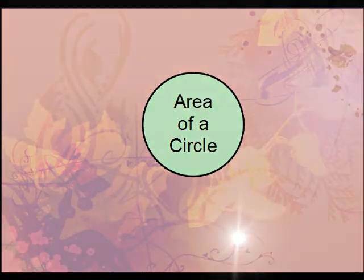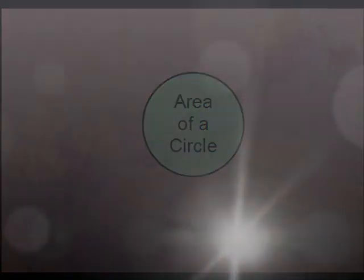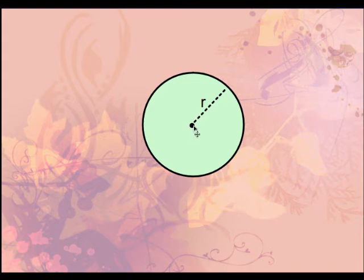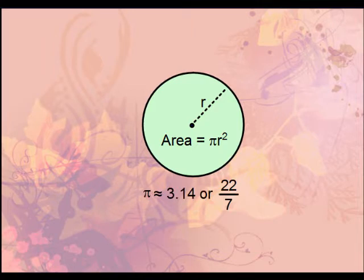This video is going to focus on the area of a circle. A circle is defined as the set of all points that are equidistant from one center point. The distance from that center point to any part of the circle is referred to as the radius. The formula for the area of a circle is pi times the radius squared.